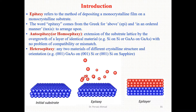Similarly, we have heteroepitaxy, which means we have two materials of different crystalline structures and orientations — for example, (001) gallium arsenide on (001) silicon, or (001) silicon on sapphire. These are the three terminologies related to epitaxy: epitaxy, auto/homo epitaxy, and heteroepitaxy.